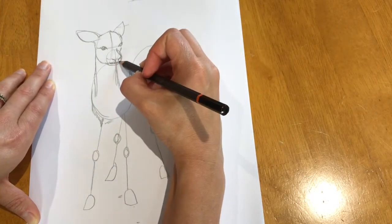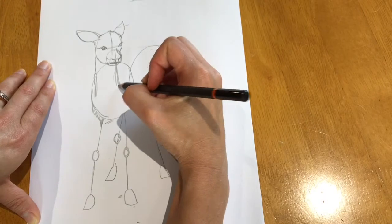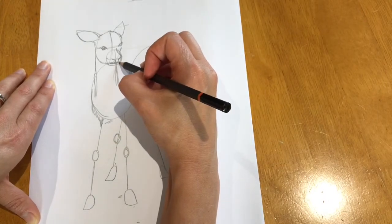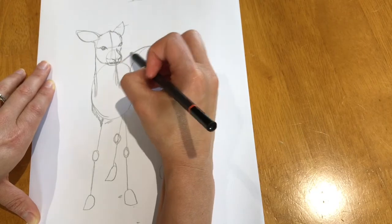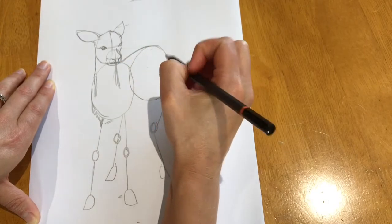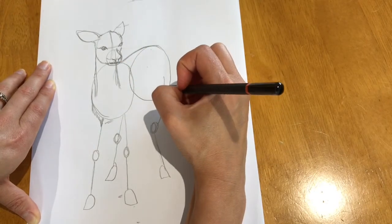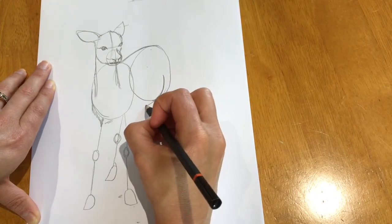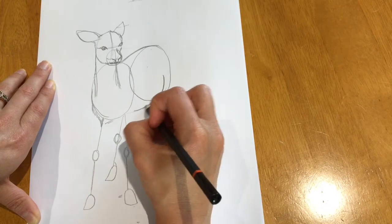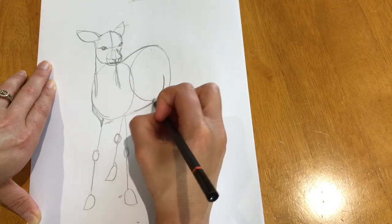We're going to join up these two large oval shapes to draw the back. Like so. The belly is going to come around here. Then we're going to join this up to the front one. Like so. Starting to take shape now.